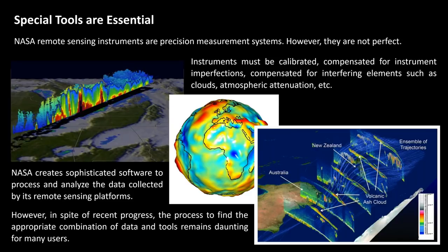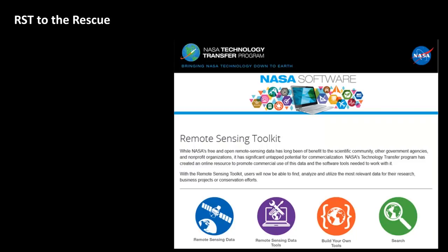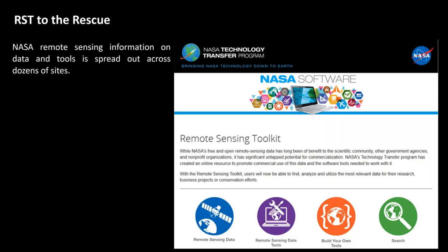So it's gotten easier in recent years, but the process to find that appropriate combination of data and tools can be challenging. And that's where the Remote Sensing Toolkit, or the RST, comes to the rescue. NASA's tech transfer program was approached by people from commercial industry wanting to know if there was a way to help address some of the challenges they were having in finding what NASA had available. The challenge is that NASA's remote sensing information about its data and tools is spread out across dozens and dozens of sites. As part of this program, the team building the RST reviewed 135 different sources of information.